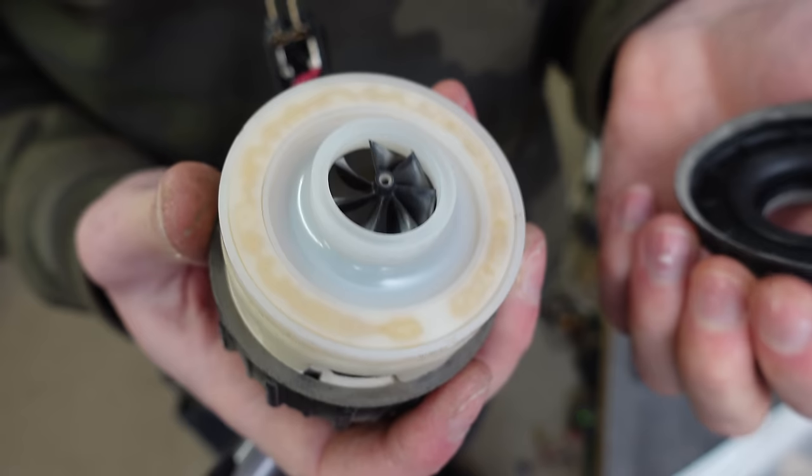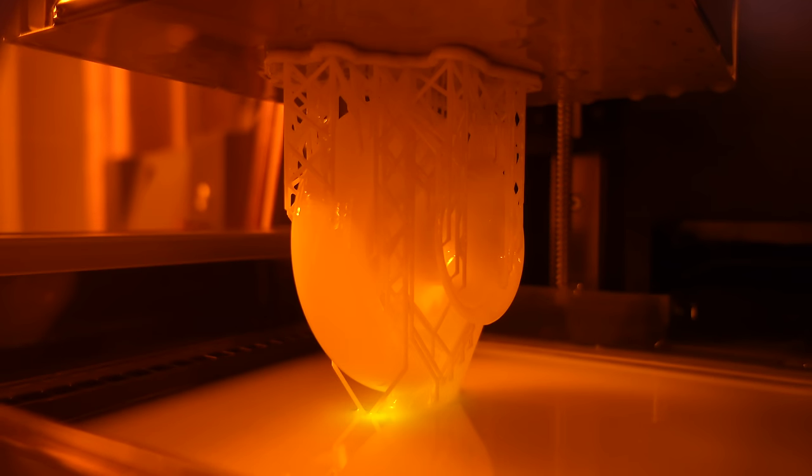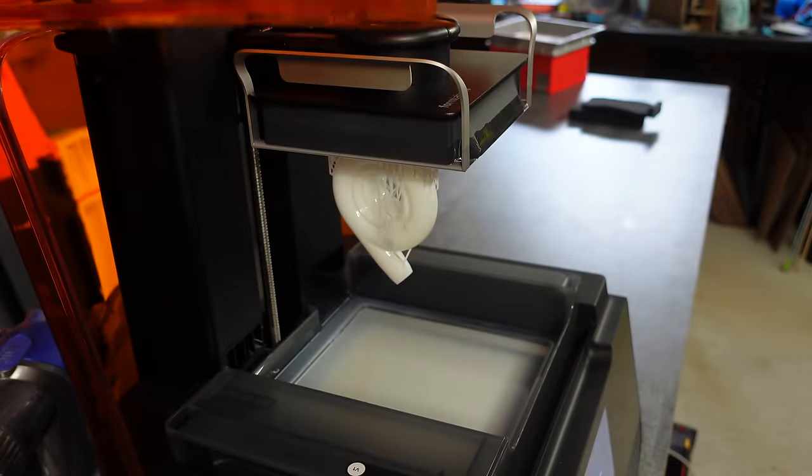The first part I printed was the impeller housing, and I printed it all as one part, which in hindsight was probably not the best idea. But it did surprisingly turn out pretty much perfect. After that, I printed some impellers and the motor mount.